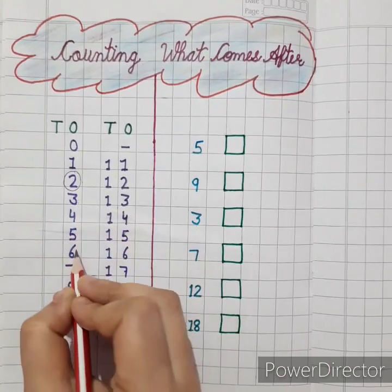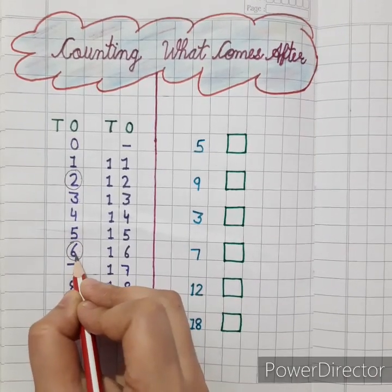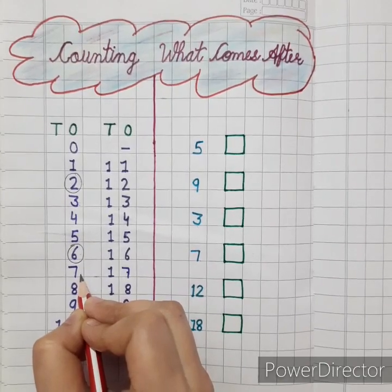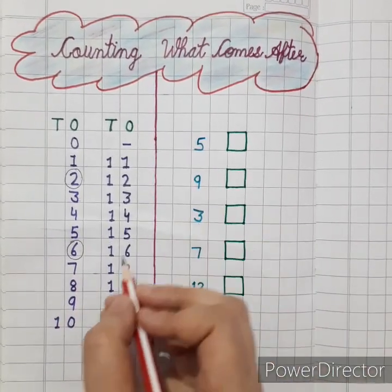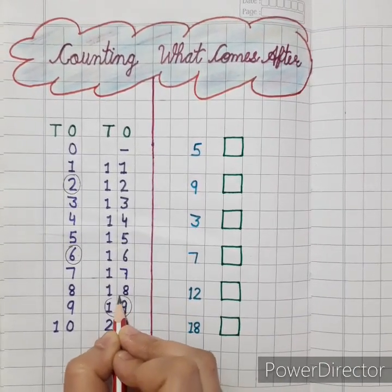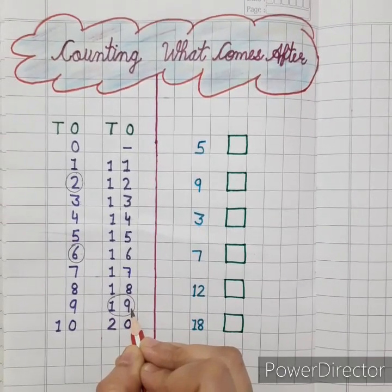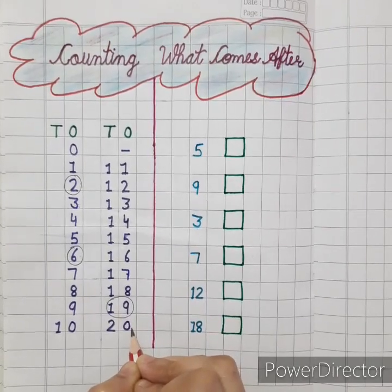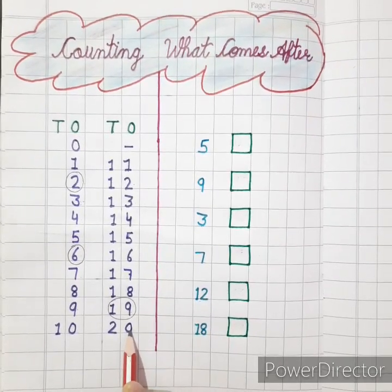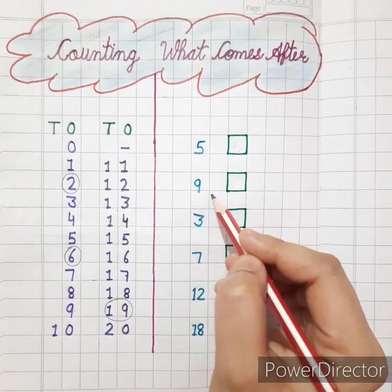Now tell me, what comes after 6? The next number after 6 is 7. One more example — what comes after 19? Check the next number. That is 20. So 20 is the right answer. Now let's practice it with an exercise.